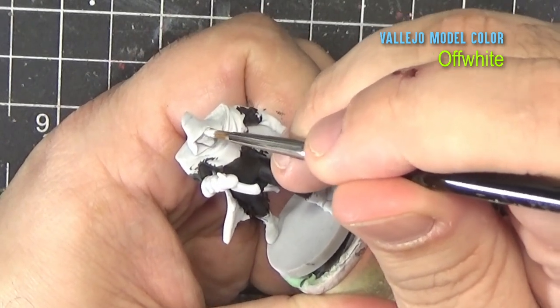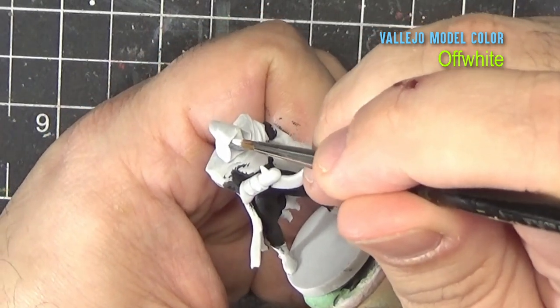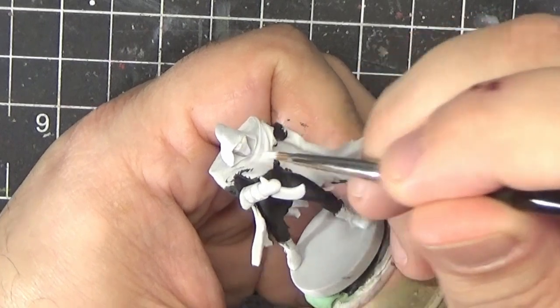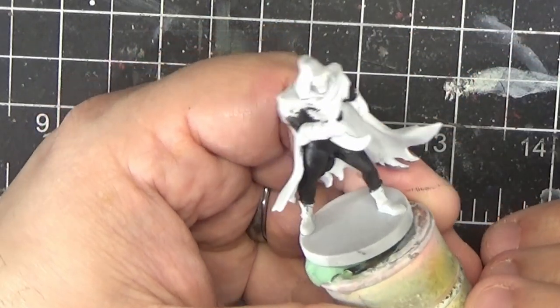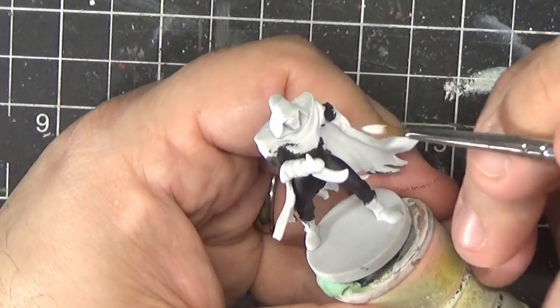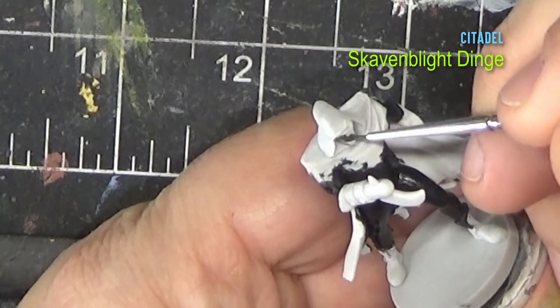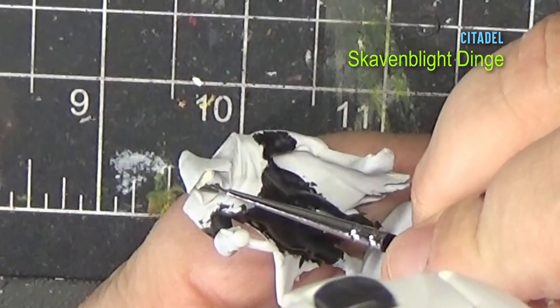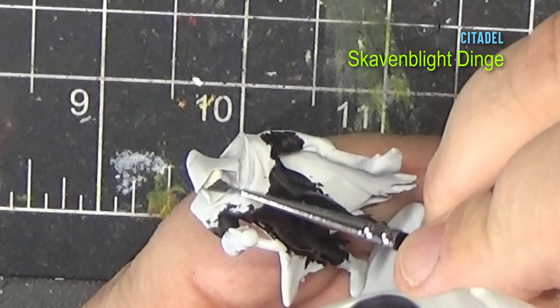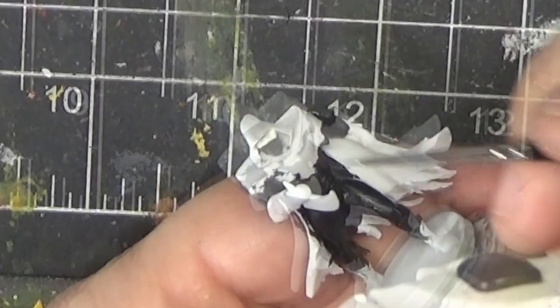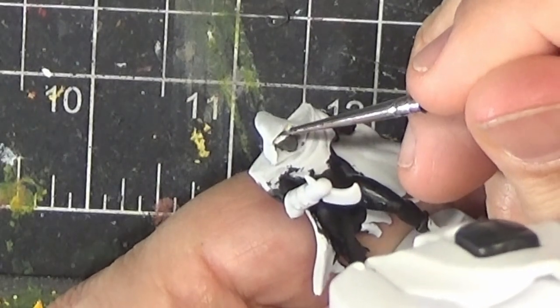Next we'll fill in the eyes with some off-white. And now we'll actually paint the mask of the Phantasm with Skavenblight Dinge. We'll use this to cut in around the eyes and really give them the right shape.